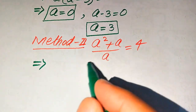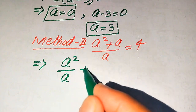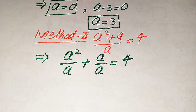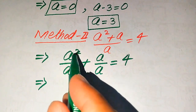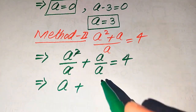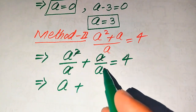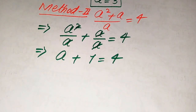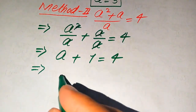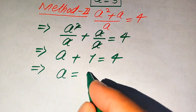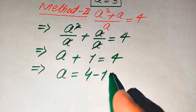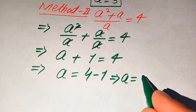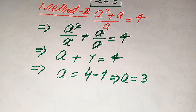We break the fraction: a squared divided by a, plus a divided by a equals 4. The a's in the first term cancel, leaving a. The a's in the second term also cancel, leaving 1. So we get a plus 1 equals 4. Moving plus 1 to the right hand side gives a equals 4 minus 1, which is 3.